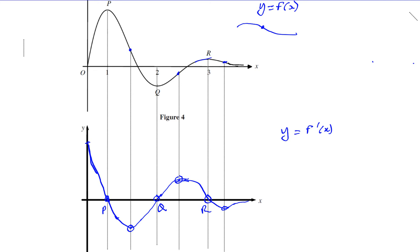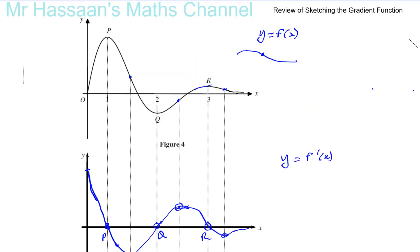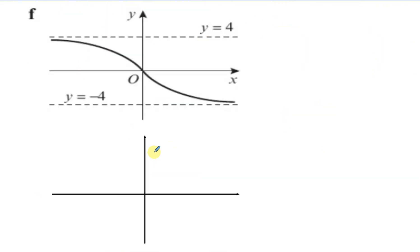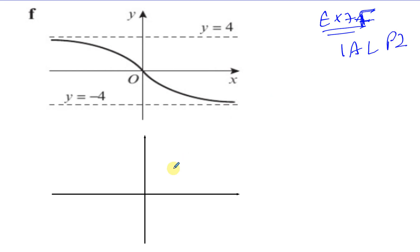Another example is from Exercise 7f in the IALP2 book — somebody asked me to draw the gradient function for this. On this side, the gradient is negative, so it's definitely going to go below the x-axis. The gradient starts off on this side coming away from zero — the gradient is negative so it's below the x-axis for sure, and it starts off close to zero but it's getting more and more negative.